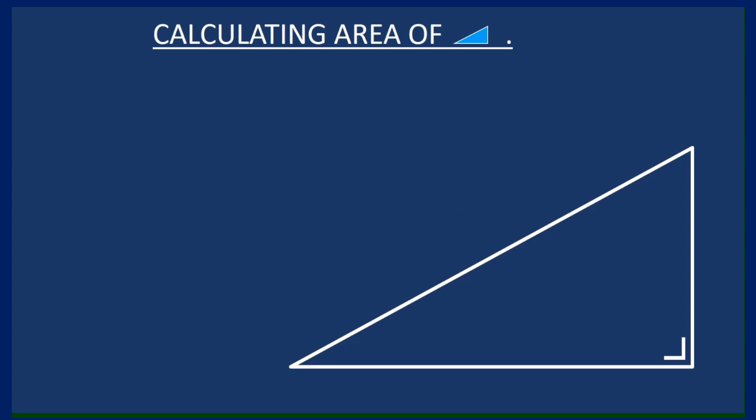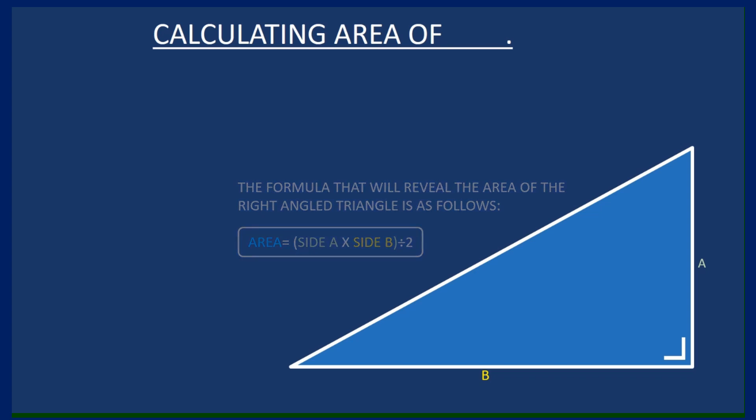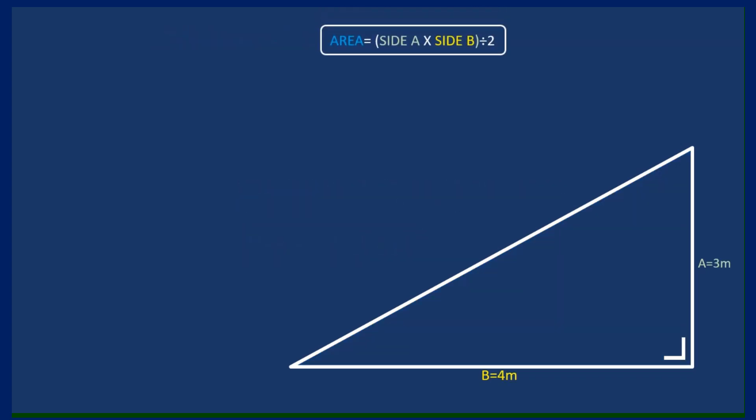In that case we're going to be labelling those two shortest sides a and b. The formula is shown there as area equals side a multiplied by side b and whatever your answer is you divide it by 2.